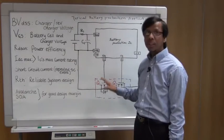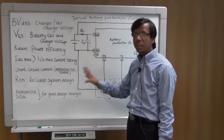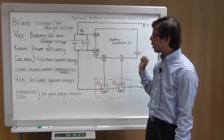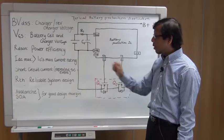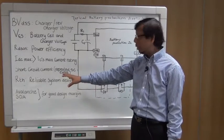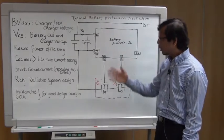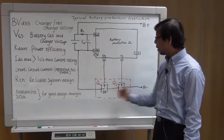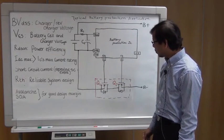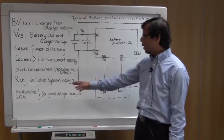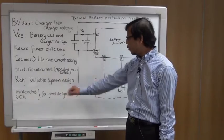Short circuit current is very important because there will be repeated short circuit events happening during this battery protection application. Thermal consideration we need to be very careful about for a very reliable system design, so the R theta, the thermal impedance of the MOSFETs, is quite important. And avalanche and safe operating area for good design margin we need to consider for the good battery protection circuit.